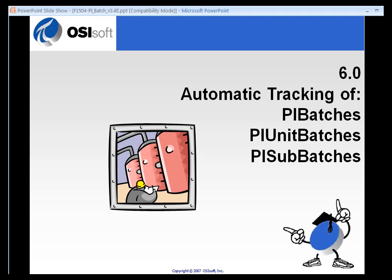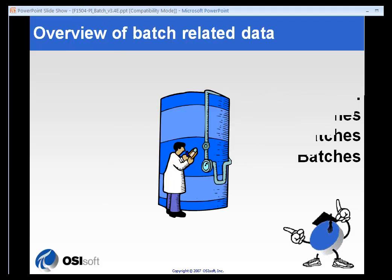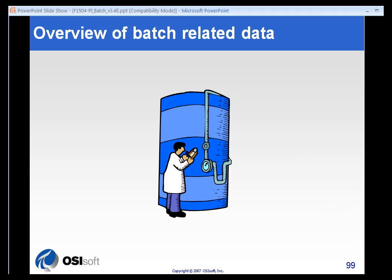The main focus of this class is exactly how do we track things like start time, end times, batches, unit batches, sub-batches. How does all that fit together with the PI system?